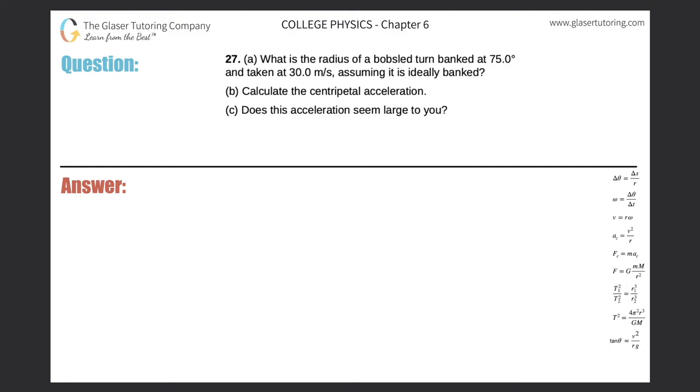Number 27, letter A. What is the radius of a bobsled turn banked at 75 degrees and taken at 30 meters per second, assuming it is ideally banked?